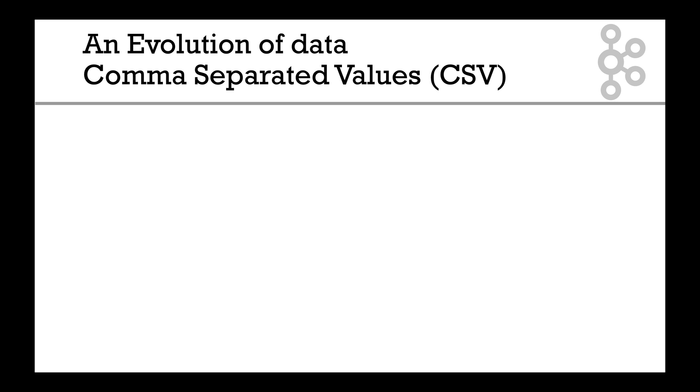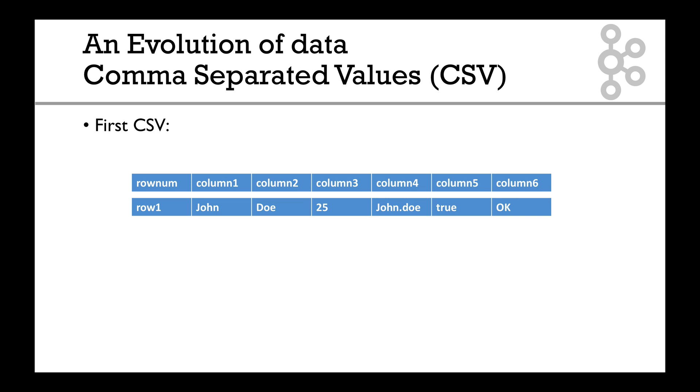We have the comma separated value or CSV. CSV is very basic - we have a set of columns and then we add a row. For example, column 1 would be John, column 2 Doe, column 3 is 25, and so on. Column 5 is a boolean true. Then row 2 we have Mary Poppins, but...